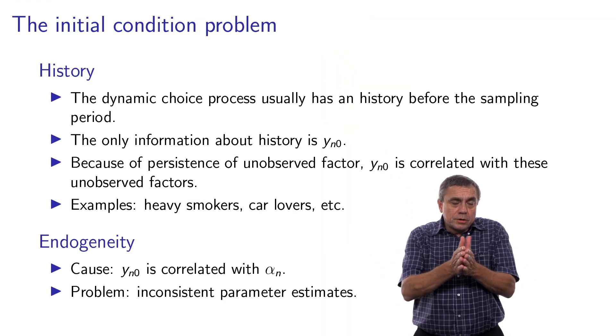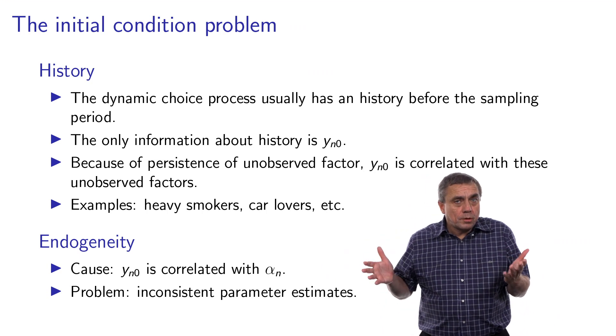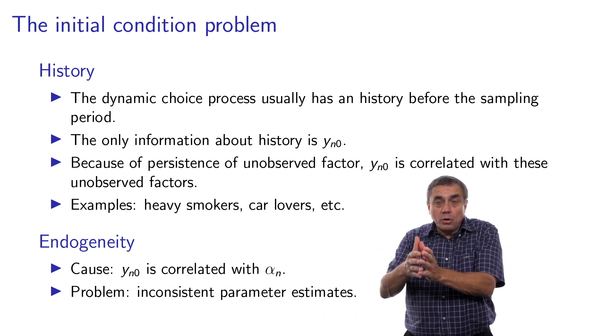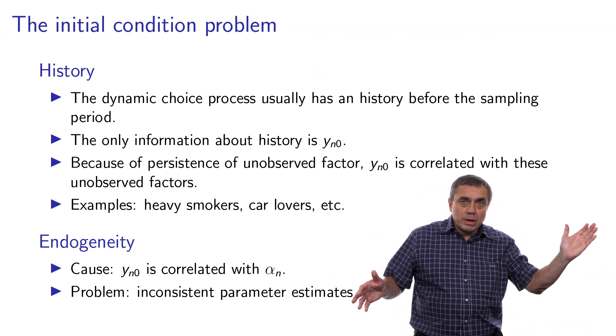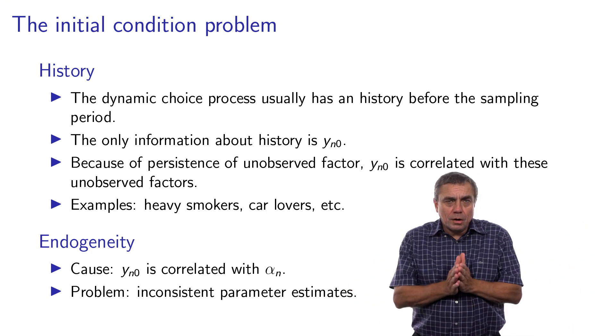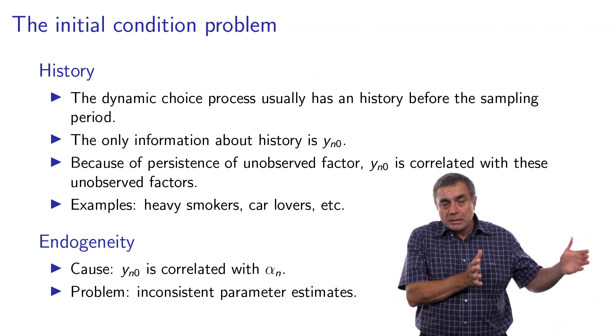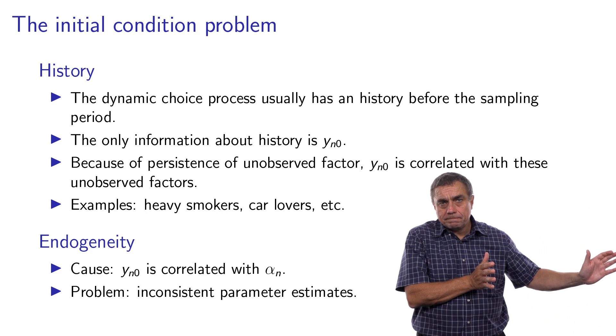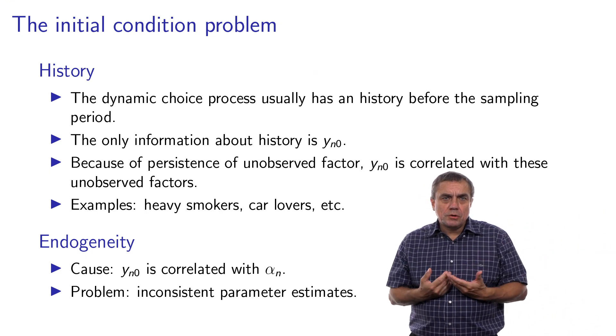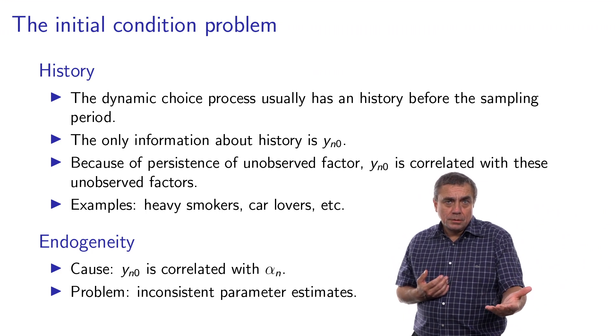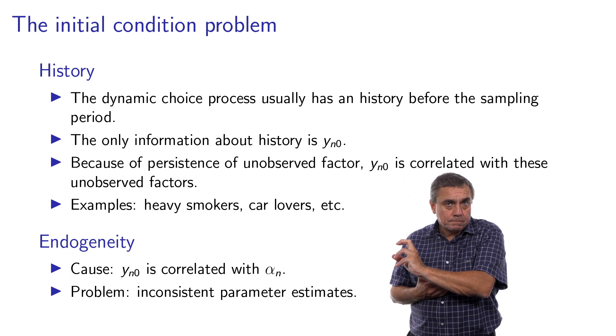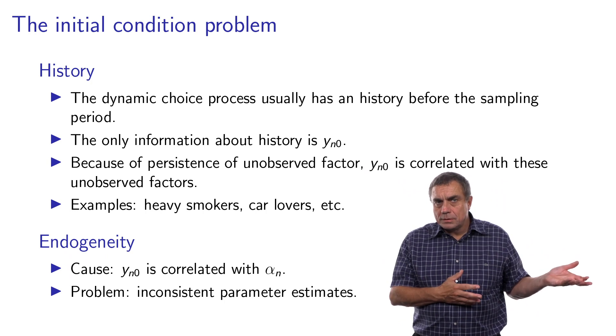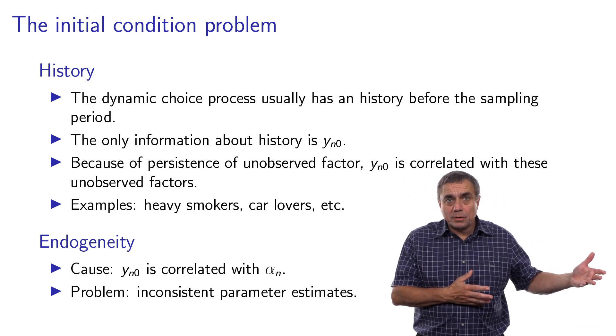When we observe individuals over time, we usually do not observe them over their lifetime. We have a window where we observe them, but the process that we follow has started usually way before we start to observe it. So somehow, the only information that we have about history is basically the first choice, which has been influenced by everything that happened in the past. But remember we had this discussion about the persistence of unobserved factors that we are capturing by this panel effect. Well clearly, the first choice is explained a lot by these unobserved factors as well. So it is correlated with these unobserved factors.